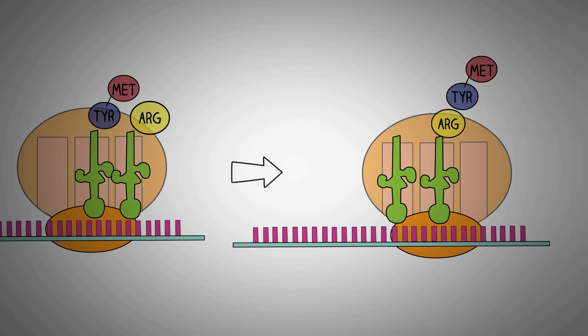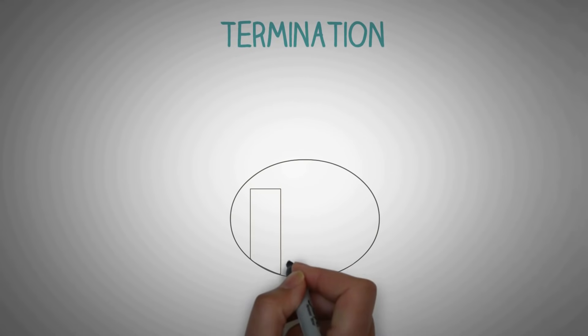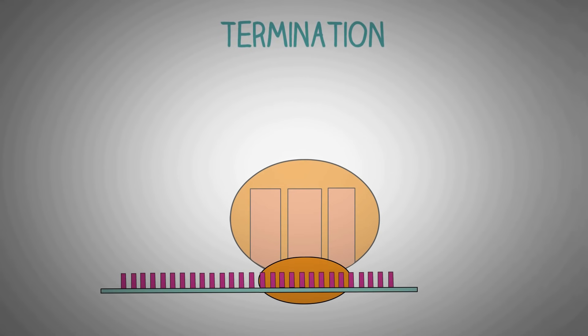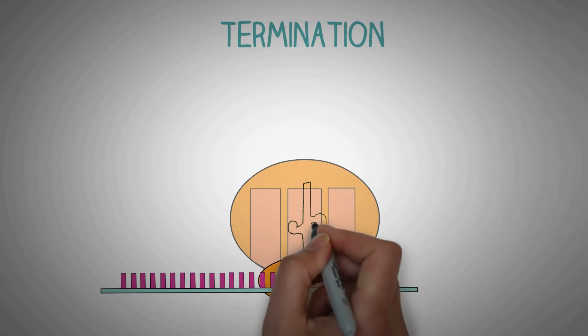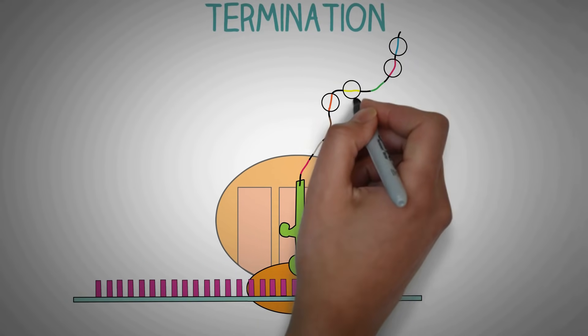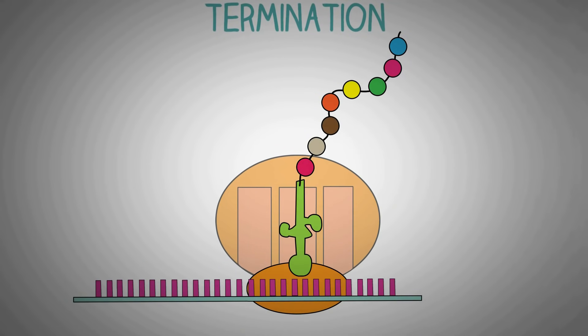The next step in the process is known as the termination. The ribosomes must have a way to know where to stop so that we get a final protein of desired number of amino acids. This is possible because the mRNA actually contains stop signals which is known as the stop codon.